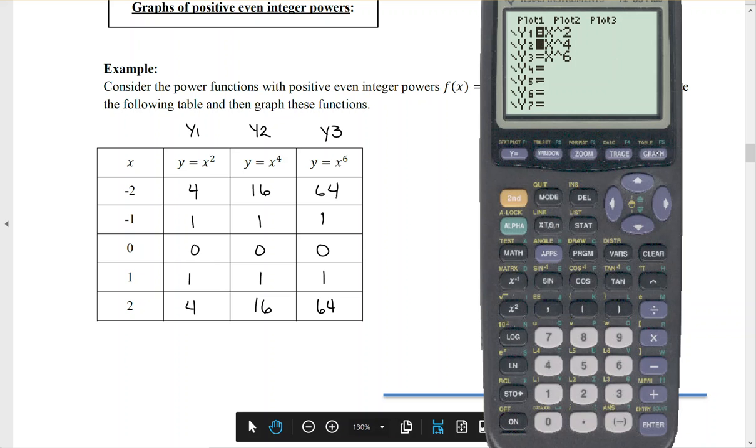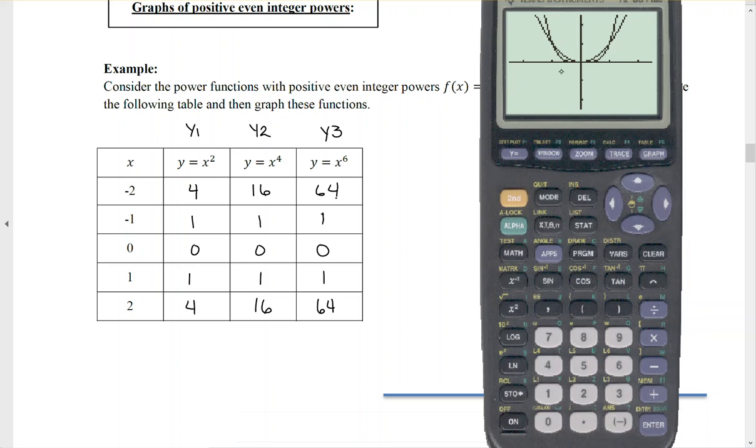I can put the next one in. So now the first one that I'm going to see is y equals x squared. The second one, x to the 4th. Notice it's a little flatter on the bottom and then goes up quicker.